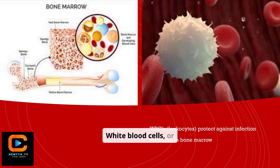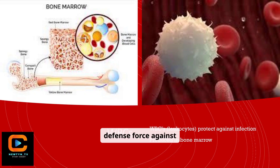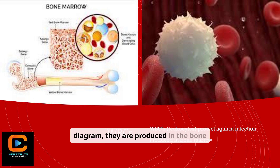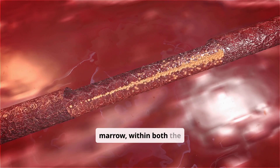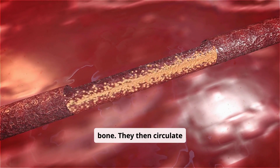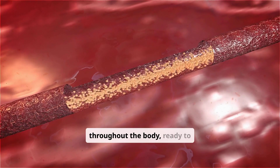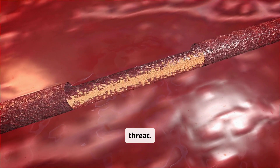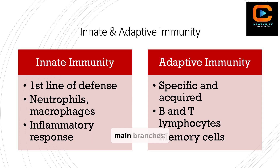White blood cells, or leukocytes, are our body's defense force against infection. As you can see in the diagram, they are produced in the bone marrow within both the spongy and compact bone. They then circulate throughout the body, ready to respond to any threat. Our immune system has two main branches: innate and adaptive immunity.